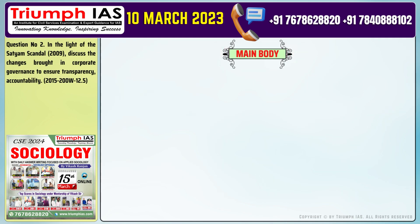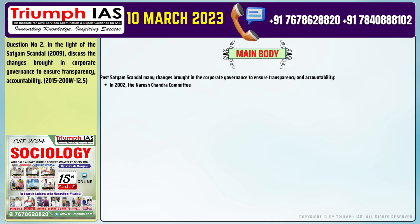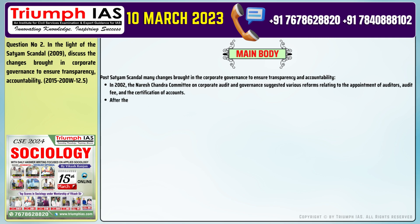Post-Satyam scandal, many changes were brought in corporate governance to ensure transparency and accountability. Number 1: The Naresh Chandra Committee on Corporate Audit and Governance suggested various reforms relating to the appointment of auditors, audit fee and the certification of accounts. After the scandal, the CII set up a task force to suggest reforms and NASSCOM established a corporate governance and ethics committee in 2003 headed by Narayana Murthy.